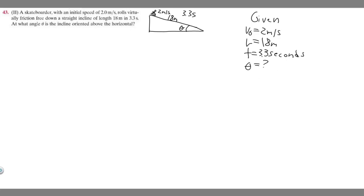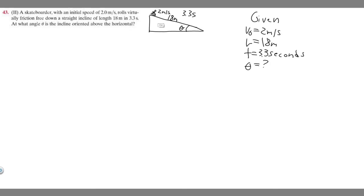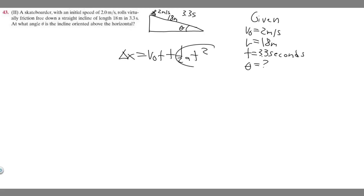In order to solve this problem and solve for theta, what we need to do first is find the acceleration. We're going to do that by using the kinematic equations and solve for the acceleration of the skateboarder at this angle in this direction. The kinematic equation we'll use is: delta x, or your length that you travel, equals v₀ times t plus one-half a times t squared.